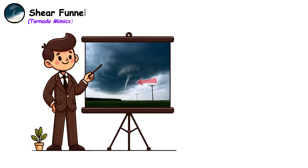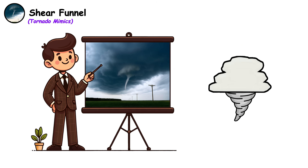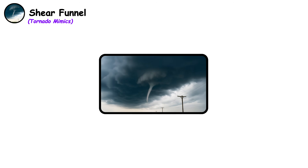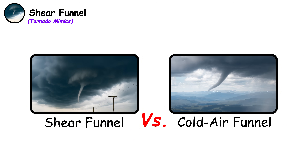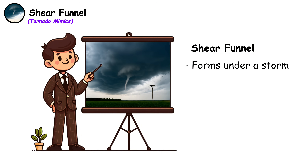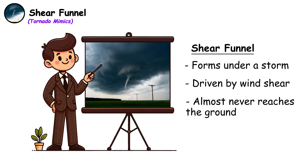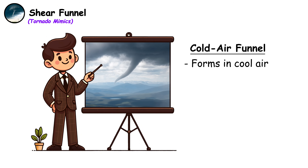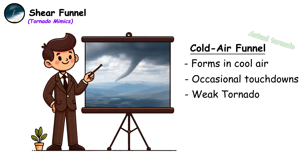Shear funnel. Shear funnels are rotating columns that form under developing clouds but never reach the ground. Although visually similar to cold air funnels, they have specific differences: a shear funnel forms under a storm due to wind shear and almost never reaches the ground. While not dangerous themselves, shear funnels indicate conditions favorable for the development of actual tornadoes. A cold air funnel, by contrast, forms in cold core systems and can occasionally touch down as a weak tornado.